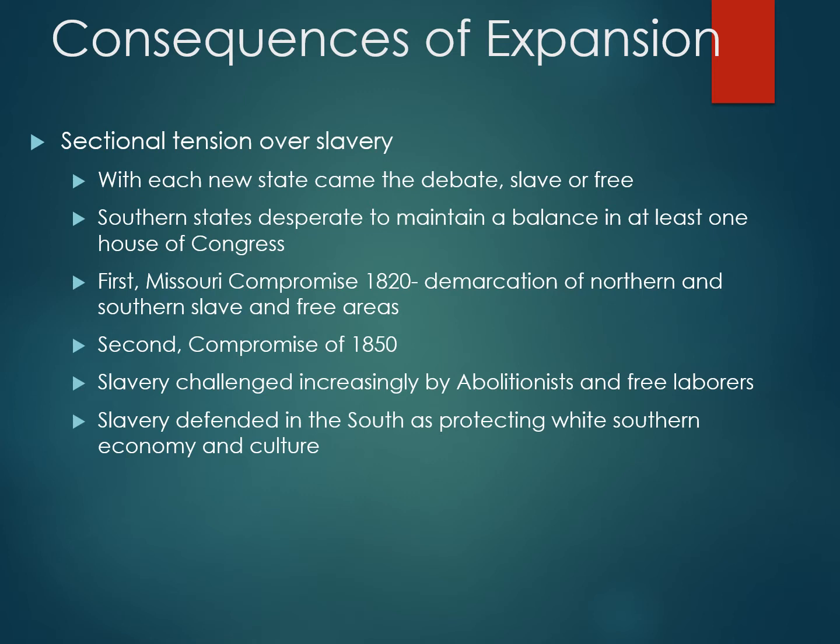Throughout the mid-century period, southern states sought to maintain a balance in which there was no complete majority of slave states in Congress. In particular, the Senate by the 1850s was the key for southern states, since every state has two senators. Southerners believed that if they could maintain a balance of southern slave states versus northern states, they could always act to prevent any action that could threaten the continuation of the slave system.